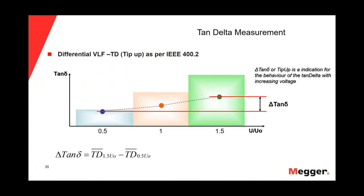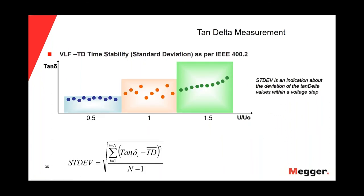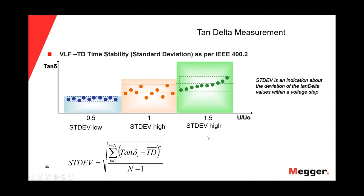The delta of the tan delta is the mean value at 1.5 U0 minus the mean value at 0.5 U0 — that is the second criterion. The third criterion is the standard deviation of the time stability of the tan delta, which measures how far or close the individual values are for each voltage step. In the first voltage step, we have a low standard deviation because the values are very close. But in the second and third voltage steps, the individual values are more dispersed.